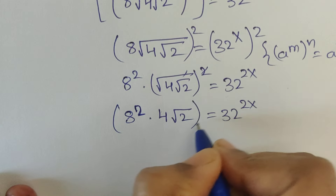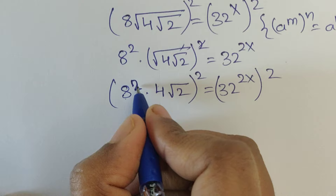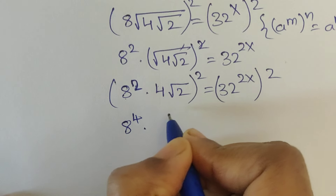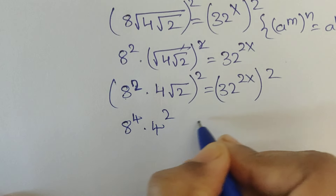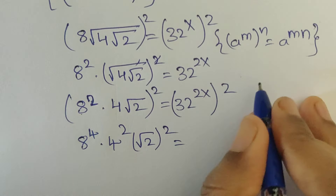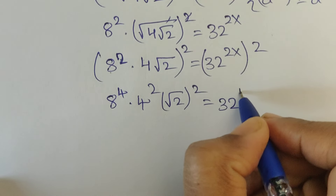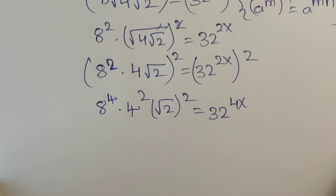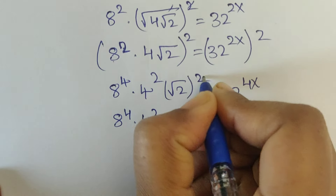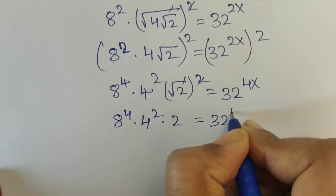Again, apply squares on both sides. So 8 power 2, and 2 times 2 equals 4, giving 8 power 4. Here 4 squared, and square root of 2 whole squared equals 32 to the power of 4x — again using the power formula, 2 times 2x equals 4x. The square root squared gets cancelled, leaving 2 equal to 32 to the power of 4x.